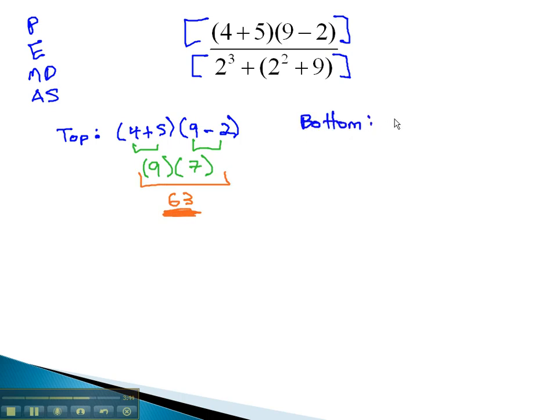The bottom or denominator is two cubed plus two squared plus nine. So again, order of operations inside the parentheses first, doing exponents first. We'll have two cubed plus two squared is four plus nine. Finish out the parentheses by adding. We have two cubed plus four plus nine is thirteen.